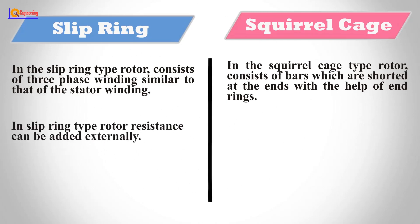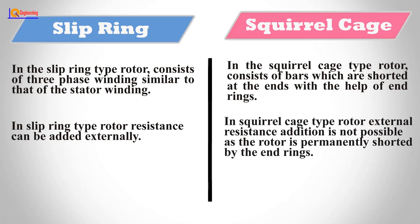In slip ring type rotor, resistance can be added externally. In squirrel cage type rotor, external resistance addition is not possible as the rotor is permanently shorted by the end rings.